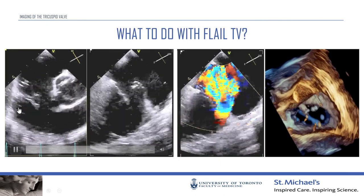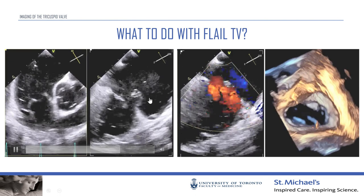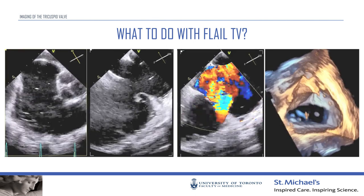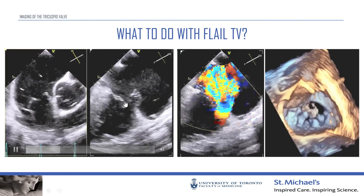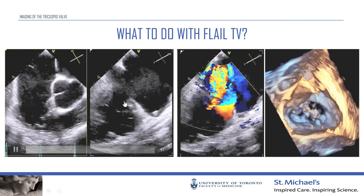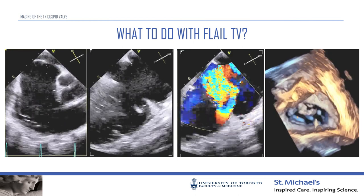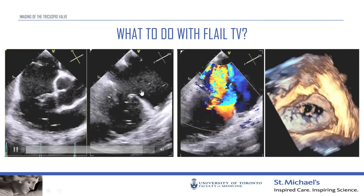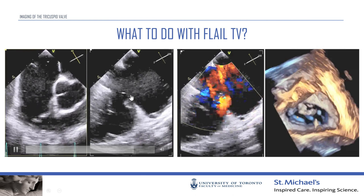One scenario we cannot treat with transcatheter devices is a flail leaflet. Because most replacement devices need to grasp the leaflet, a very mobile flail segment prevents the device from staying in place, and the macoaptation gap is often too large. One patient was kicked by a horse 20 years ago, flailed his anterior leaflet, and remained asymptomatic until developing heart failure. Since he had no other comorbidities, he was referred for surgery.